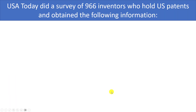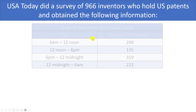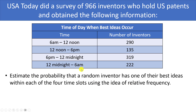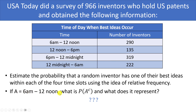Here's one more problem: a USA Today survey of 966 inventors who hold US patents recorded when they had their best ideas — from 6am–noon, noon–6pm, 6pm–midnight, or midnight–6am — along with the number of inventors in each slot. First, estimate the probability that a random inventor has their best ideas in each time slot using relative frequency — divide each count by 966. Then, if A is the event '6am to noon,' find P(A^c) and describe what it represents.